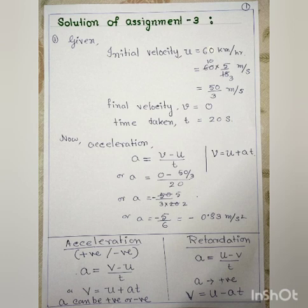Here, the given initial velocity is u equals to 60 km per hour. Listen very carefully: if any numerical value is given not in the SI system but in any other system, first you have to convert it into the SI system. The SI unit of velocity is meter per second, so you convert km per hour to m/s. Now, 1 km per hour equals 1000 by 3600 meter per second, that is 5 by 18 meter per second. So if you multiply 60 by 5 by 18, you get the unit in meter per second.